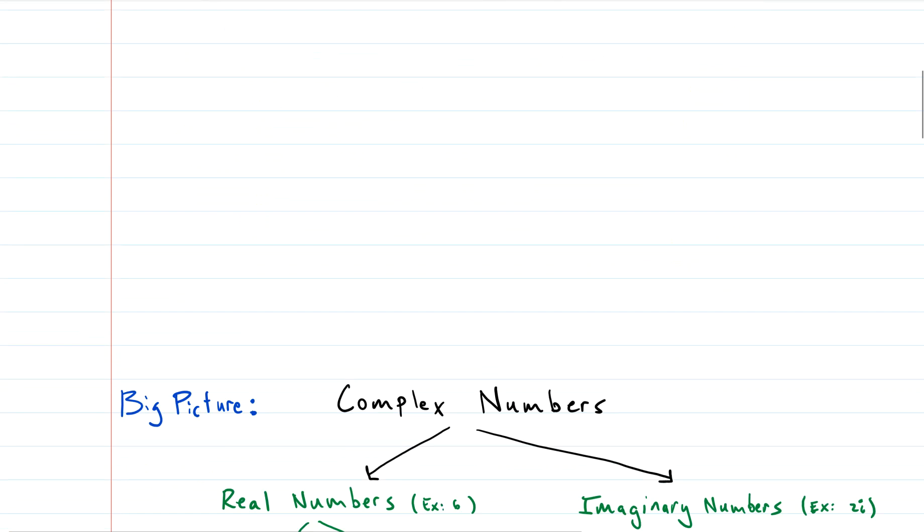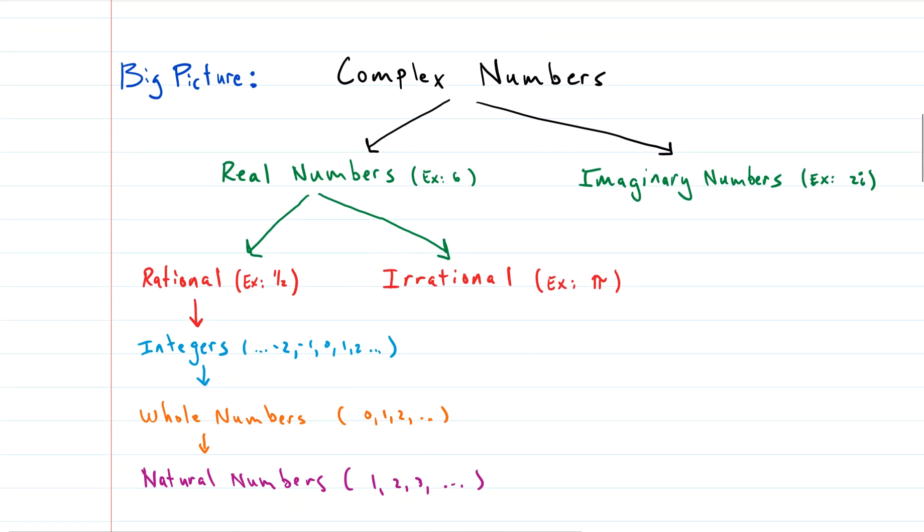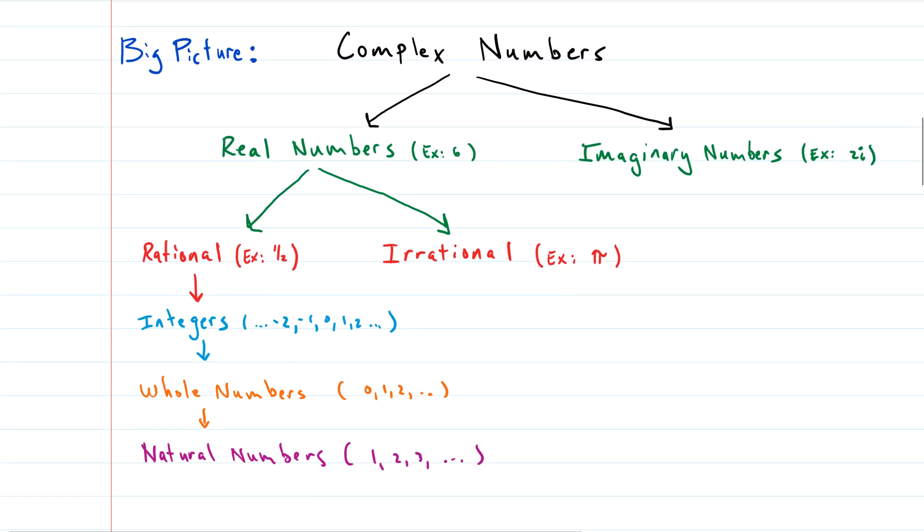Let's go. Big picture: what is a complex number? Well, a complex number in short is everything. Everything you've dealt with in algebra is a complex number. So complex numbers break down into smaller groups, and those smaller groups break down into continually smaller groups. If you look at this diagram, the most inclusive group is the top, and as we go down they are less inclusive.